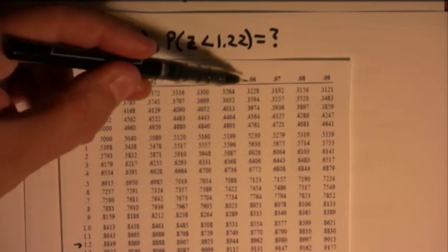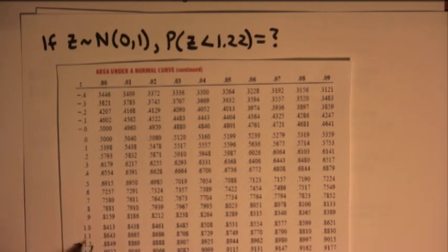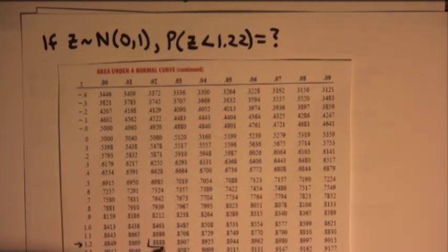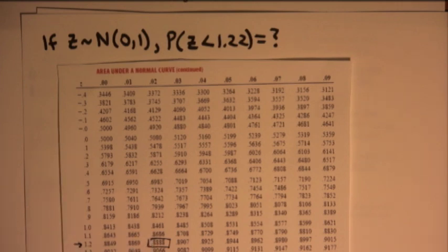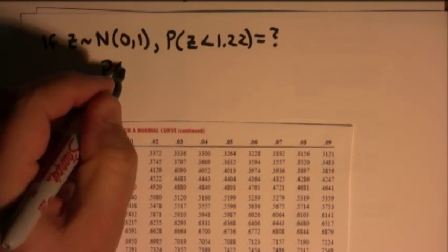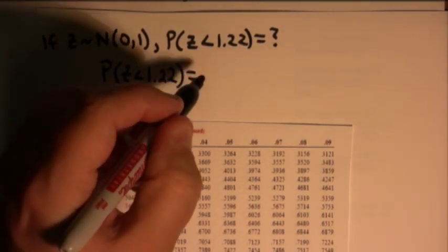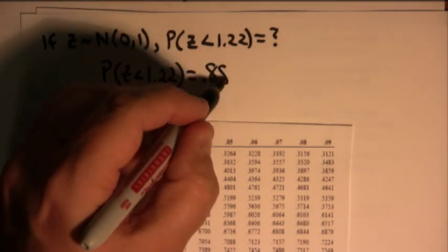1.23, and so on, all the way to 1.29. And I'm looking for 1.22, so that's 0, 1, 2. So that is the table value, and the probability is 0.8888. So the probability that z is less than 1.22 is simply 0.8888.